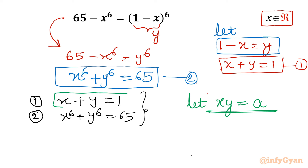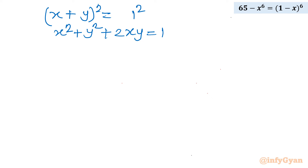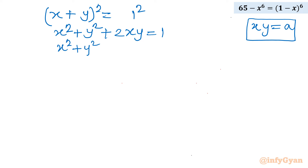I will take the very first equation of this system and calculate x power 6 plus y power 6 from there. Starting with x plus y equal to 1, let us take squaring: x squared plus y squared plus 2xy equal to 1. Since we substituted xy equal to a, I can write x squared plus y squared plus 2a equal to 1, or x squared plus y squared equal to 1 minus 2a.